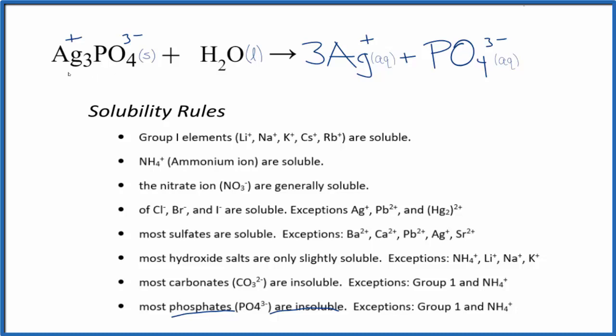So this is the equation for Ag3PO4. The little bit that dissolves will break apart into three silver ions and the one phosphate ion.